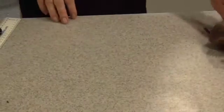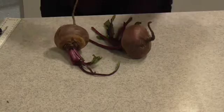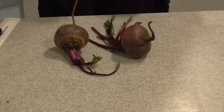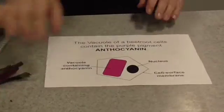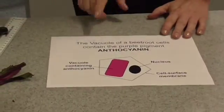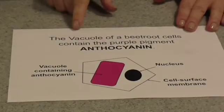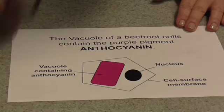The tissue we're going to use for this investigation is beetroot tissue. It has to be fresh beetroot — not pickled, not cooked. The reason we're using beetroot is that beetroot cells contain a red compound called anthocyanin. It's a sort of purpley-red colour — it's what gives beetroot its lovely colour.